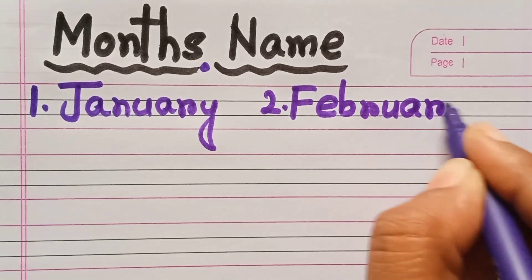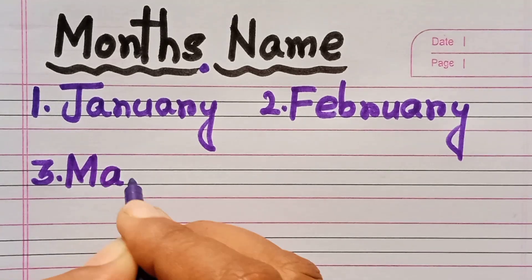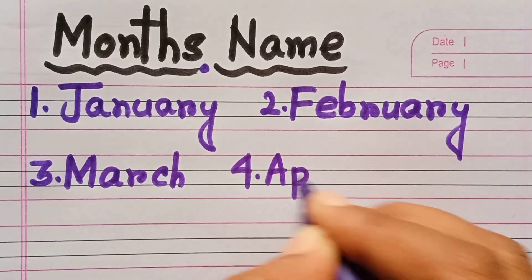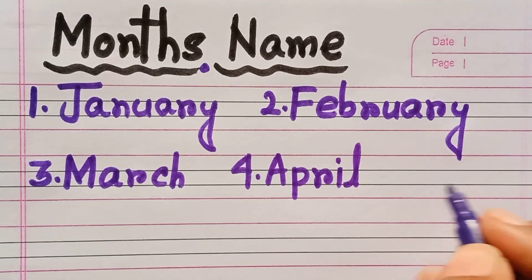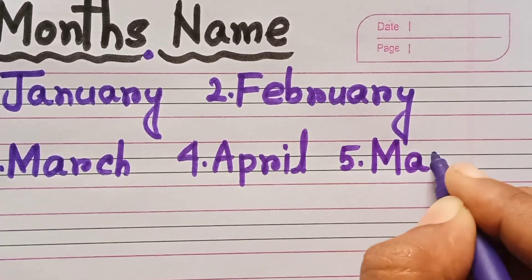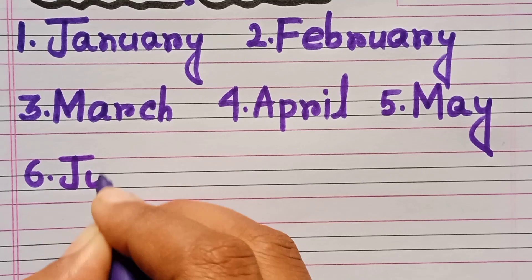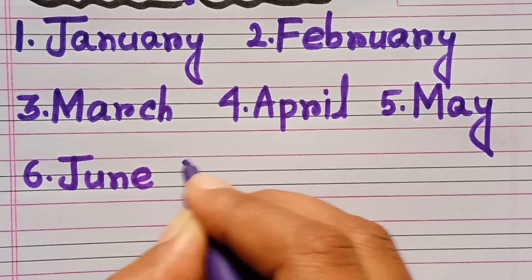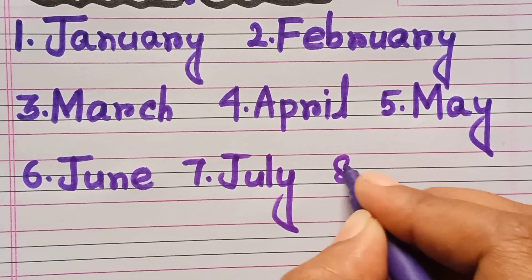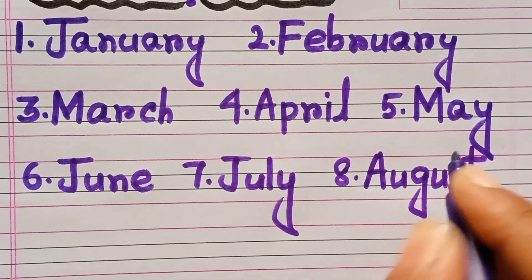March — M-A-R-C-H — March. April — A-P-R-I-L — April. May — M-A-Y — May. June — J-U-N-E — June. July — J-U-L-Y — July. August — A-U-G-U-S-T — August.